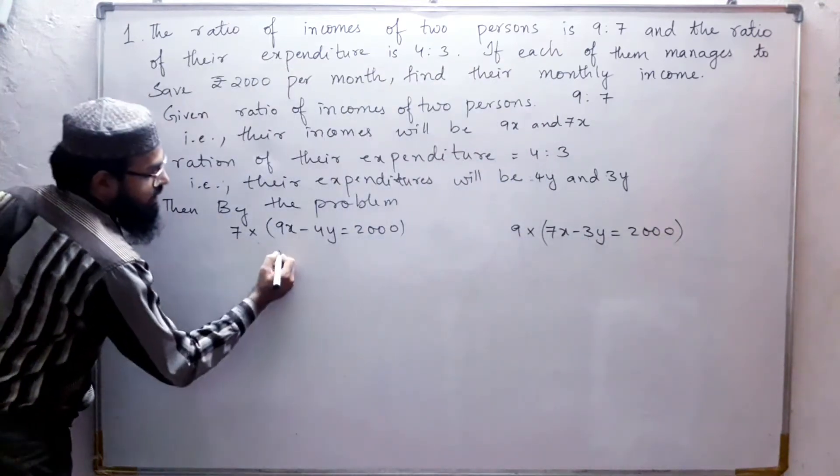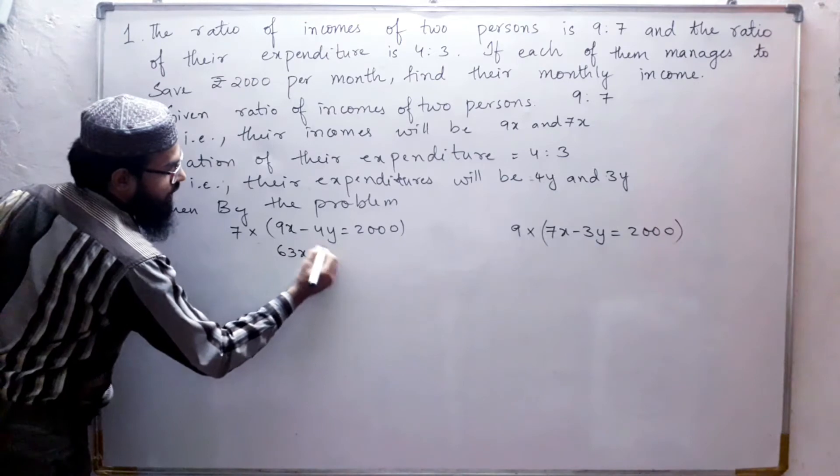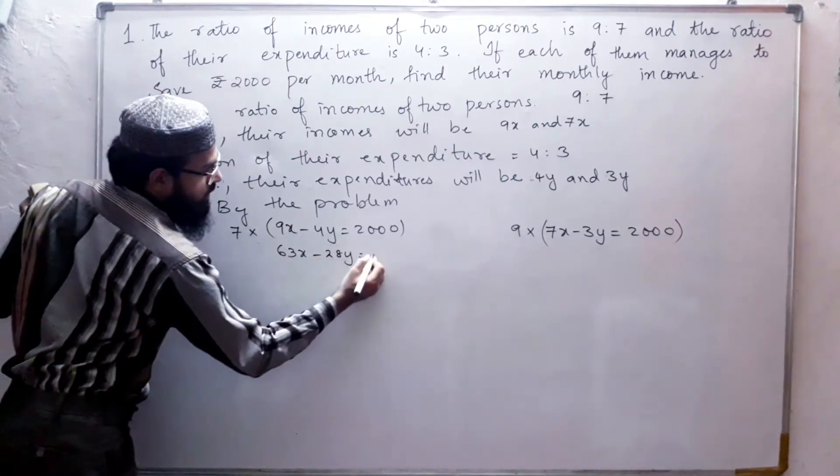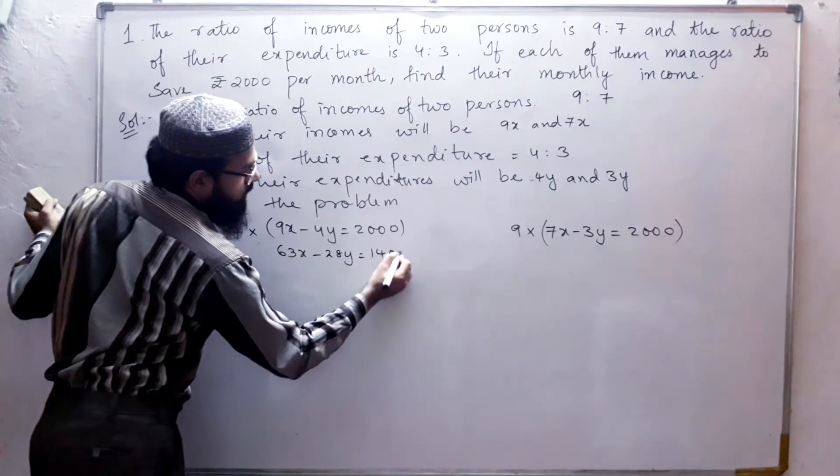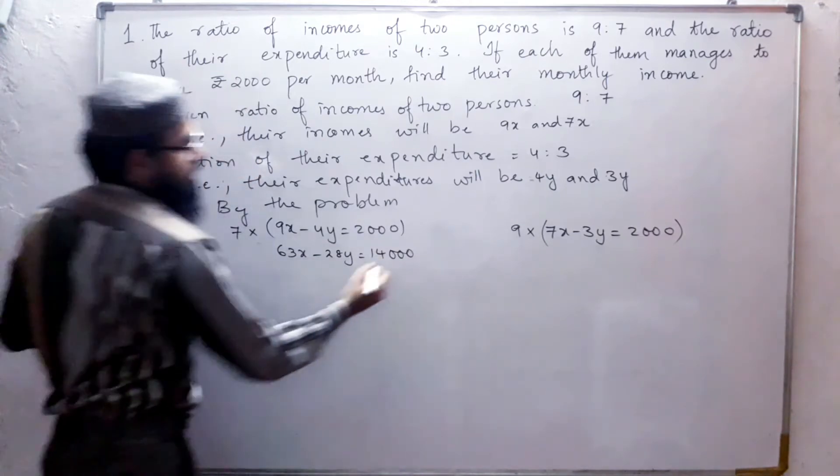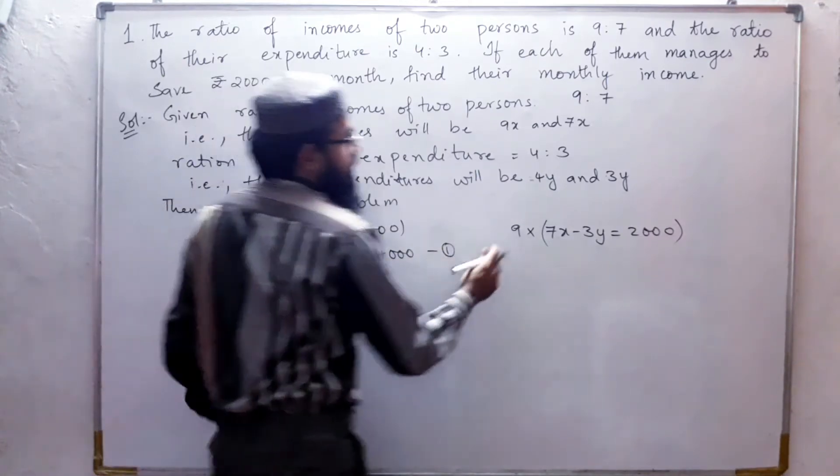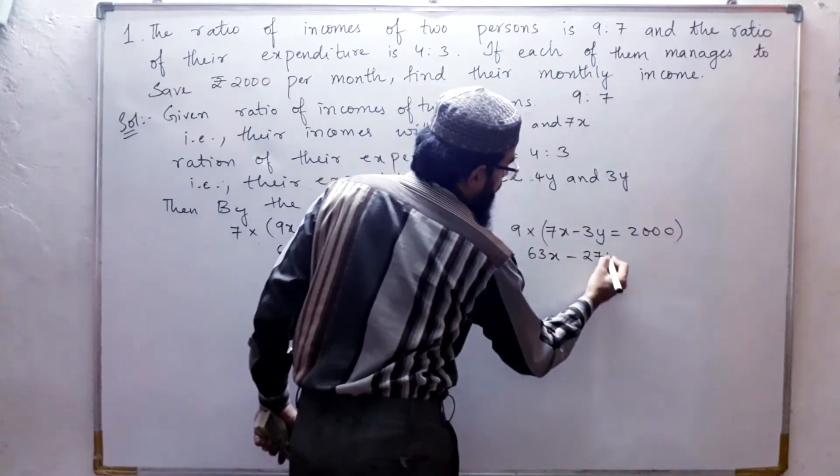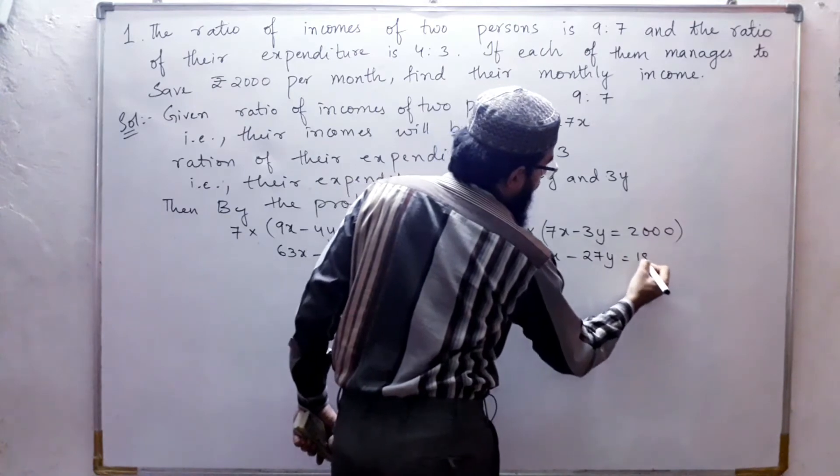We get 63x minus 28y equals 14,000. This is our first equation. 9 times 7 is 63x, 9 times 3 is 27y, 9 times 2 is 18,000. That's the second equation.